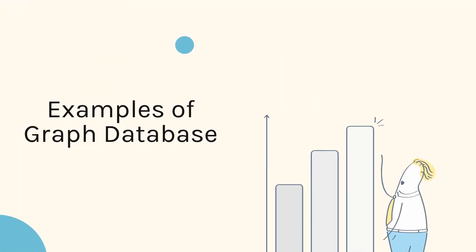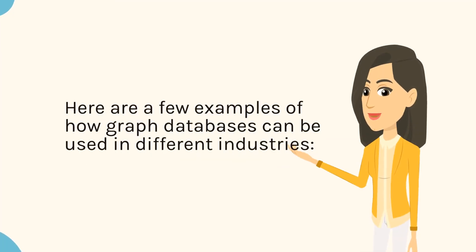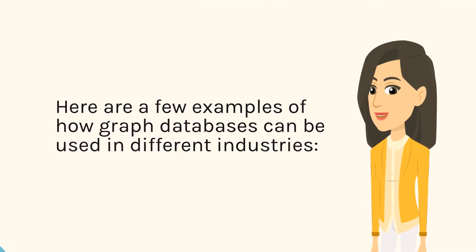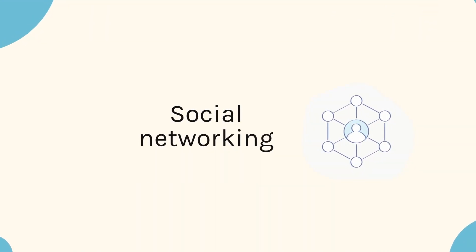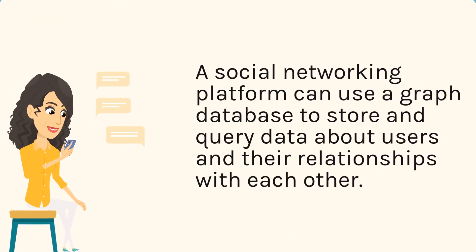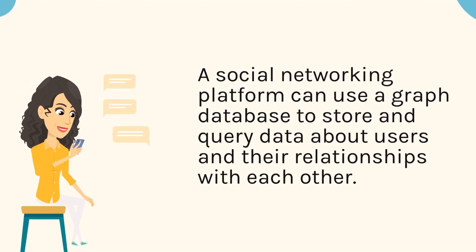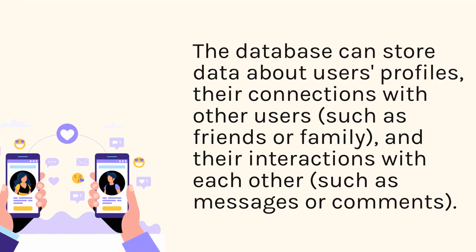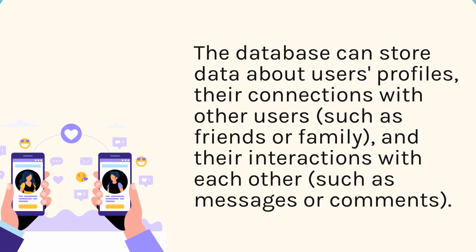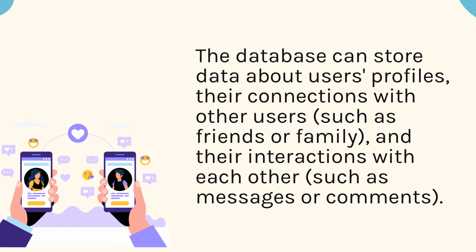Examples of graph databases. Here are a few examples of how graph databases can be used in different industries. Social networking — a social networking platform can use a graph database to store and query data about users and their relationships with each other. The database can store data about users' profiles, their connections with other users such as friends or family, and their interactions with each other such as messages or comments.